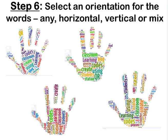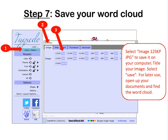Step six is to select an orientation for your words. You can have horizontal words, you can have vertical words, a mix of horizontal or vertical, or just any with the words going in all sorts of directions. Then you save your word cloud — I always choose image 125KB JPEG — and title the image, save it on your computer for later use. You'll open up your documents and find the word cloud.